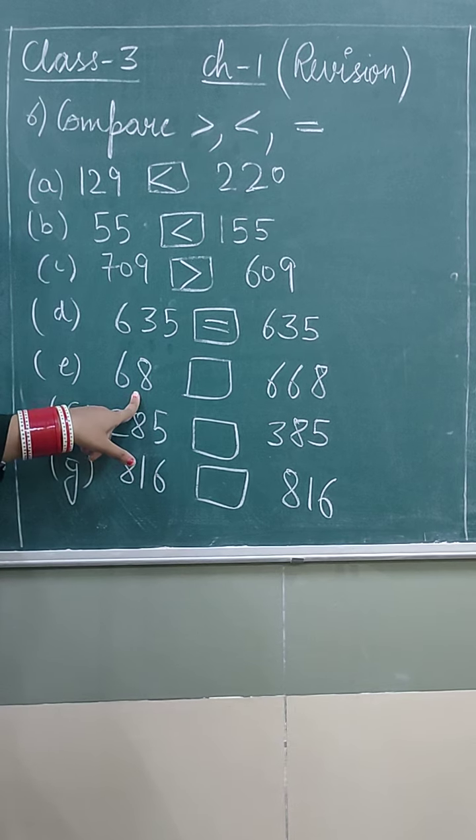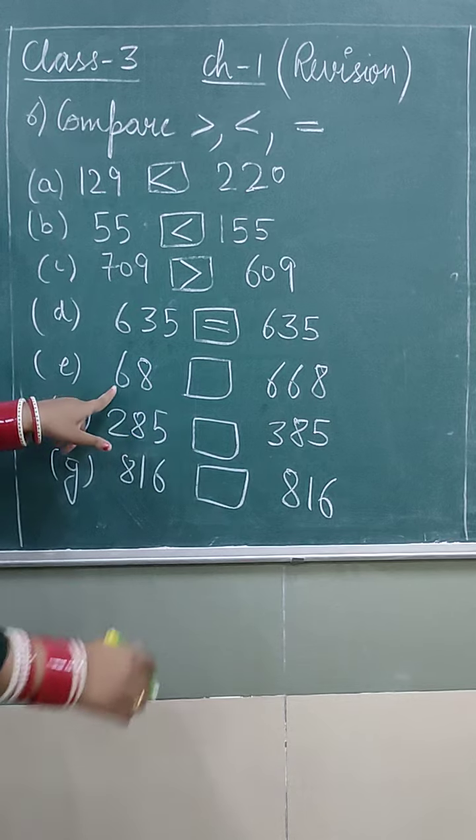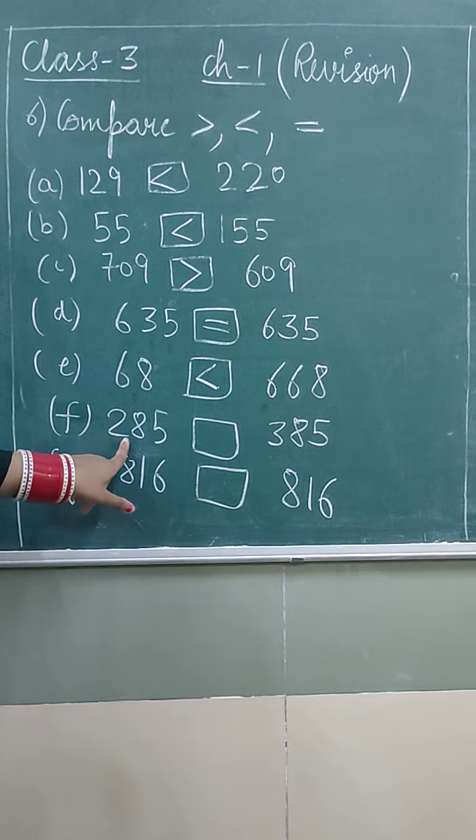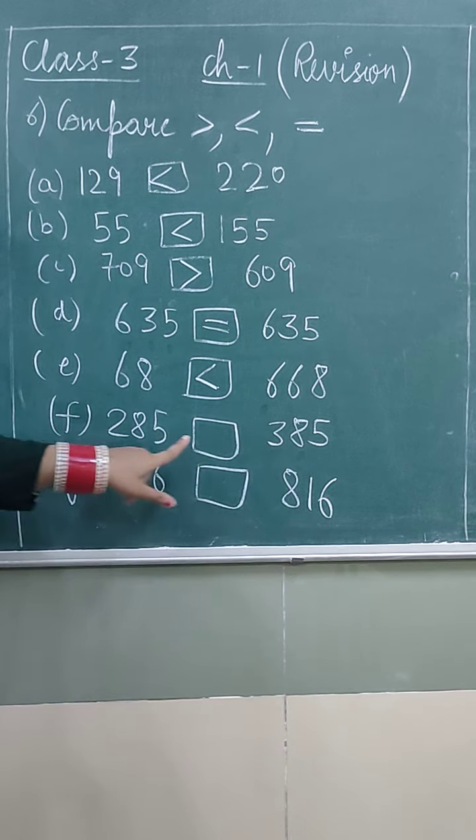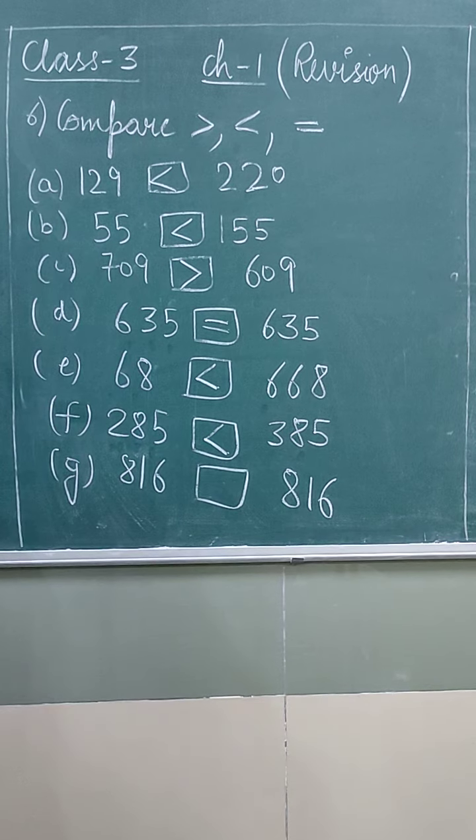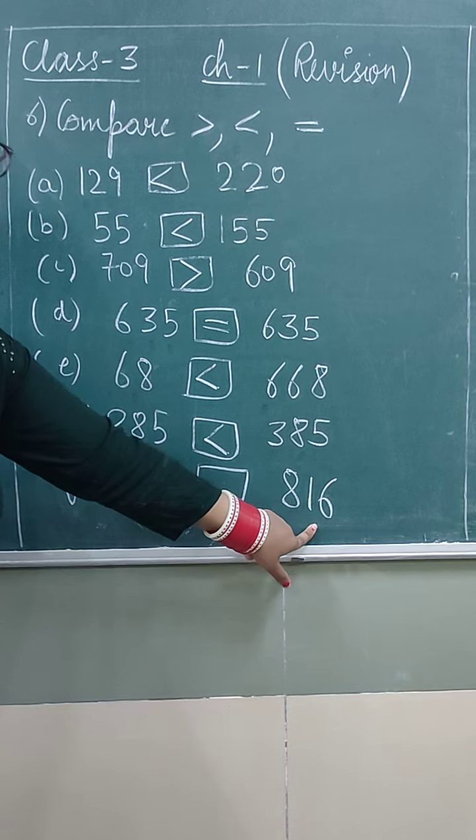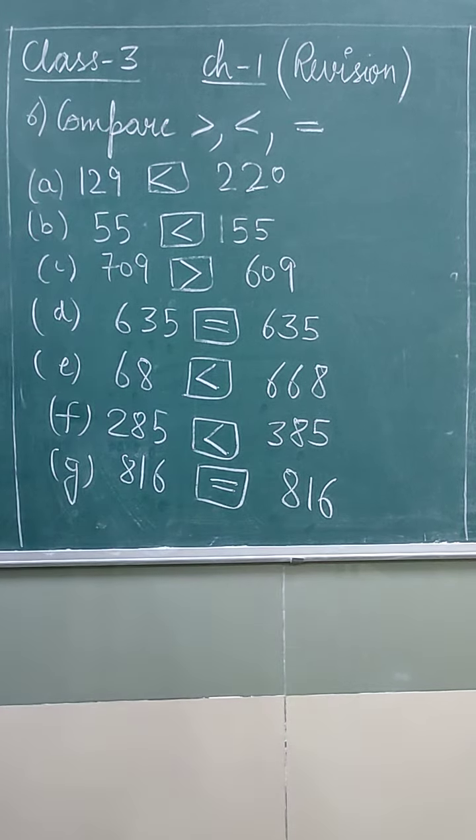Here we have 68, here we have 668. 68 is less than 668. Here we have 285, 385. 285 is less than 385. Here we have 816, 816. They both are same, so we will put equal to sign. All the parts.